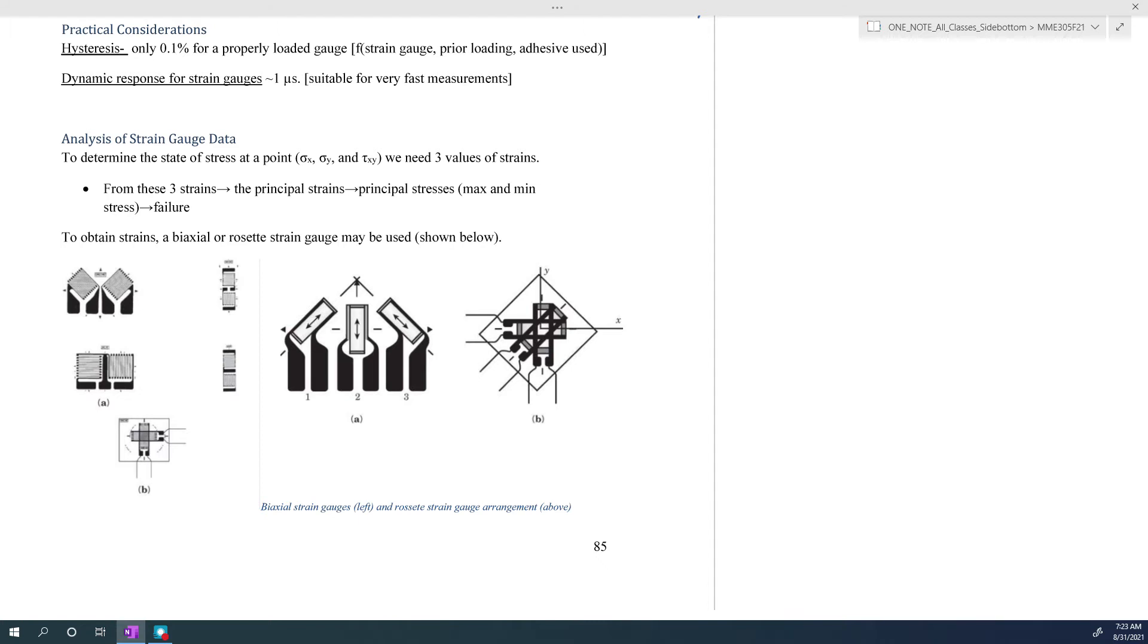Dynamic response for strain gauges can be as fast as 1 microsecond. This is good for very fast measurements, so you can use strain gauges to measure things like vibrations and other fast loading conditions.